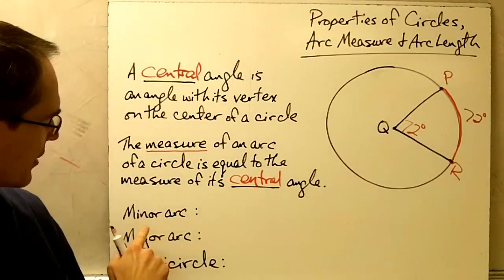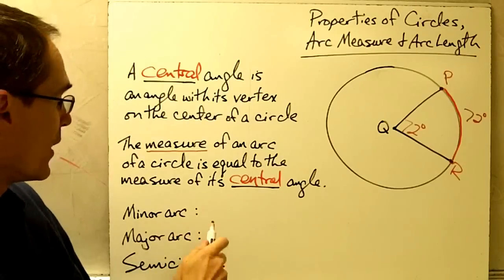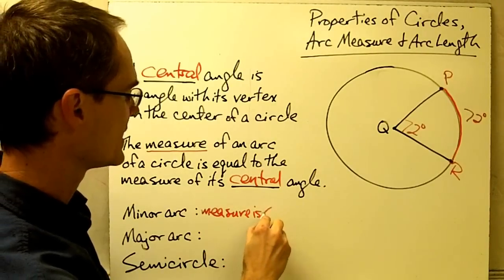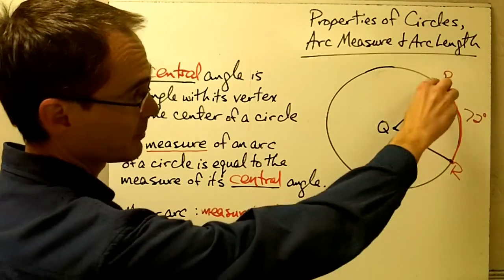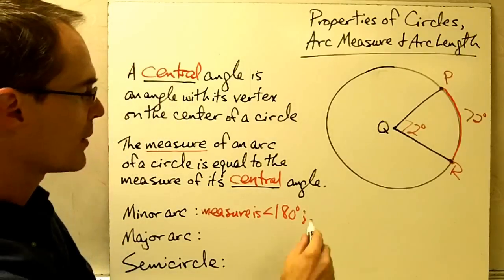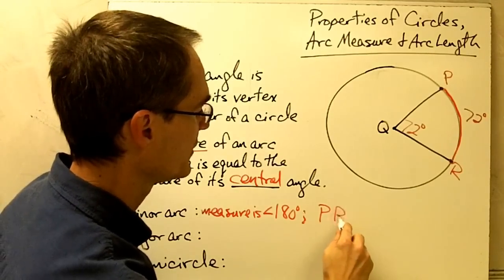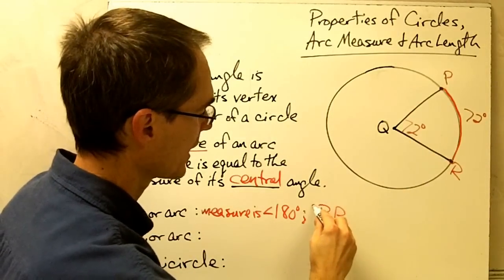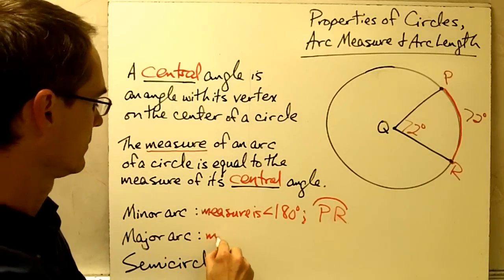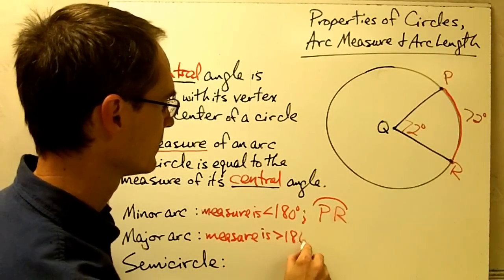A couple things to note about arcs. There are minor arcs, major arcs, and semicircles. A minor arc has three things you need to know: its measure is always less than 180 degrees. Arc PR here would be a minor arc. And it's always labeled using two letters — for example, arc PR — using two letters.